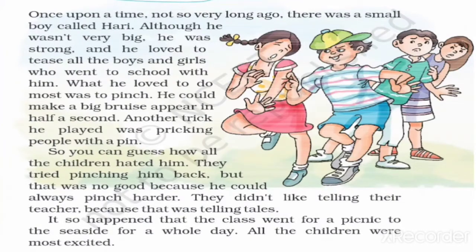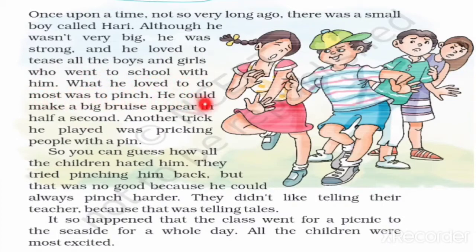Look at the first paragraph: 'Once upon a time, not so very long ago, there was a small boy called Harry.' 'Not so very long ago' means this happened in the past, not very long before now. This incident happened — and what was the incident? There was a small boy called Harry.